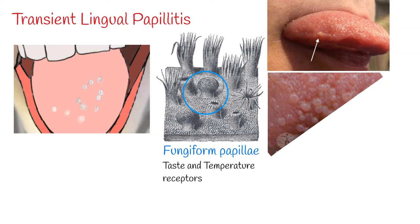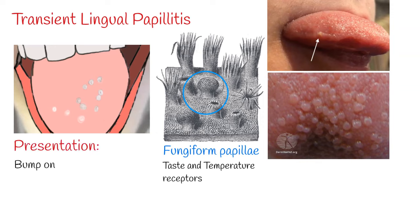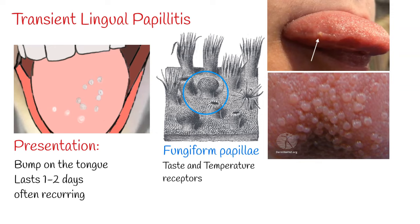Signs and Symptoms: The classic form of transient lingual papillitis presents as a single painful raised red or white bump on the tongue, usually towards the tip. It lasts one to two days then disappears, often recurring weeks, months, or years later.